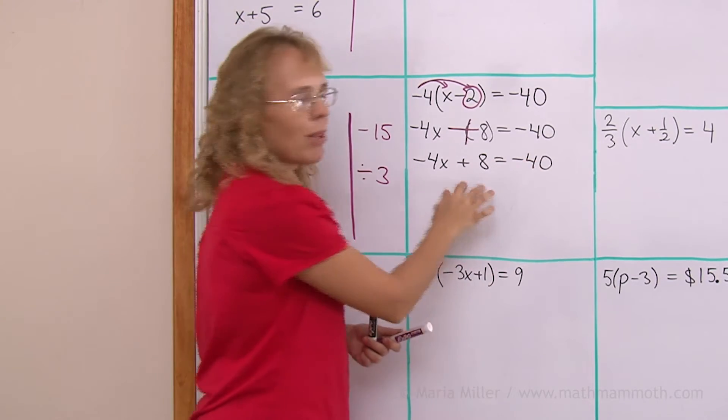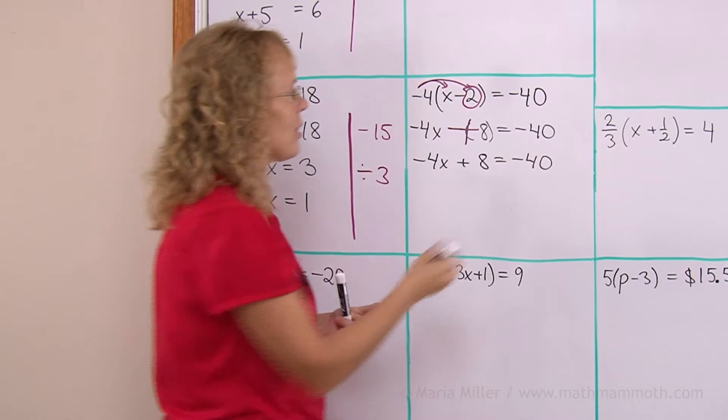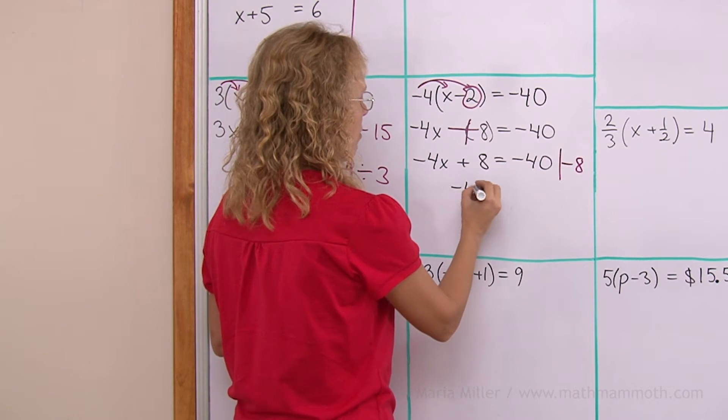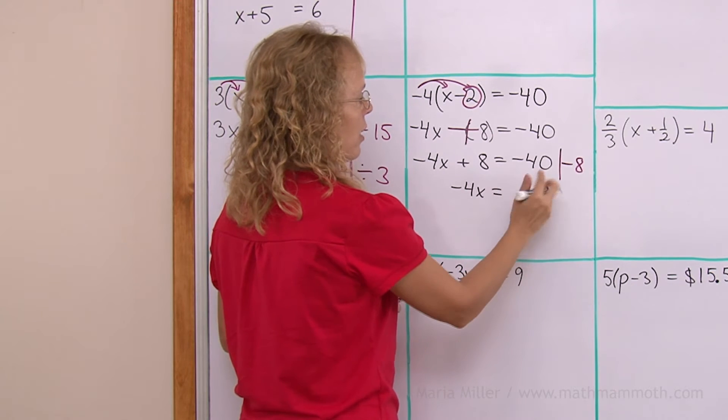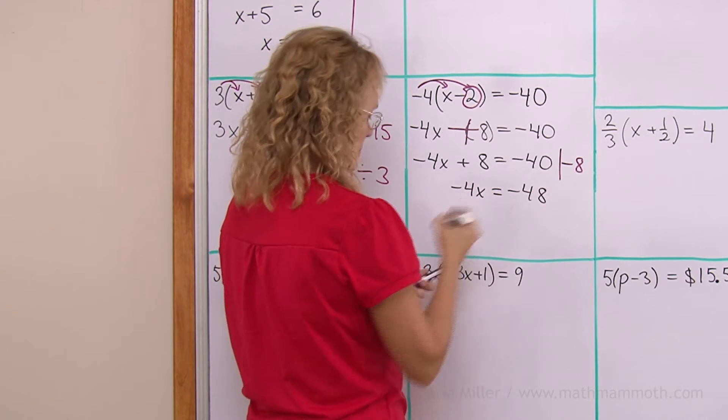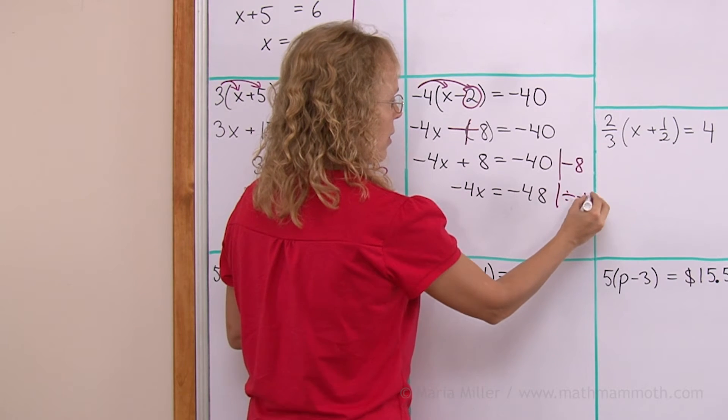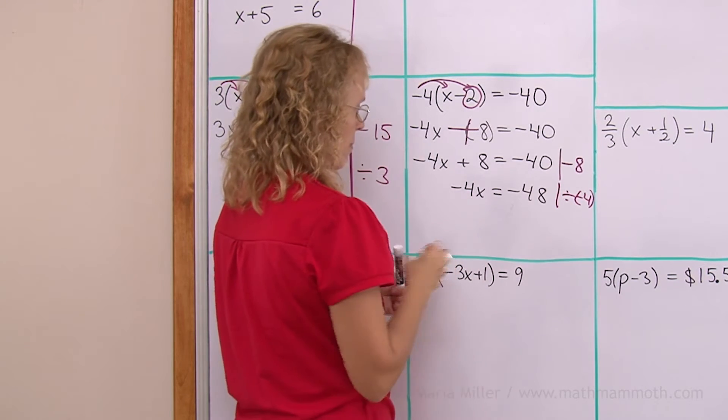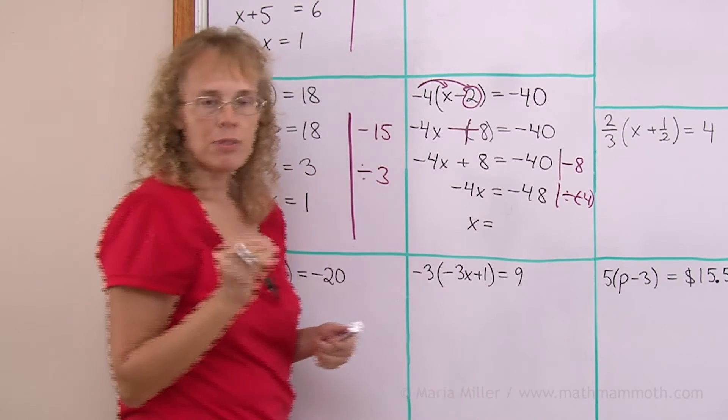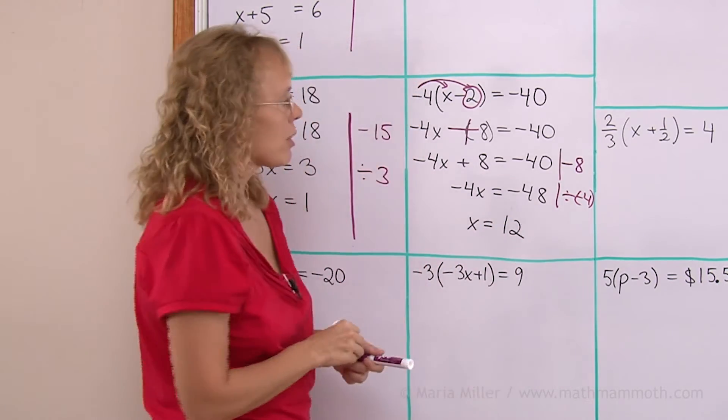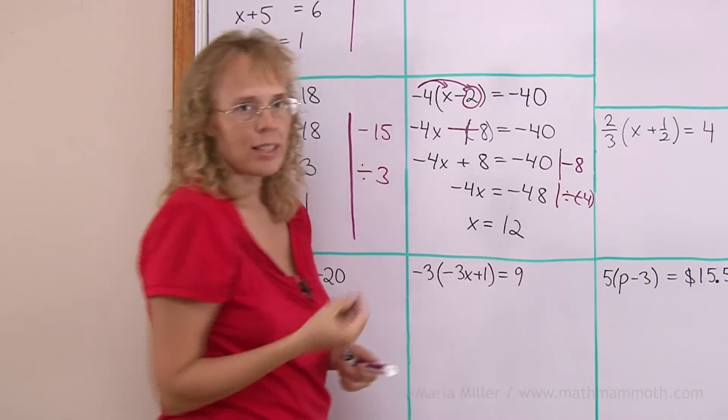And now plus 8. I will subtract 8 from both sides to get rid of that. So I have negative 4x. And over here, I get negative 48. And then lastly, I just divide both sides by negative 4. So x is now alone. And then 48 divided by 4 would be 12. And it is positive 12 because I have a negative divided by a negative.